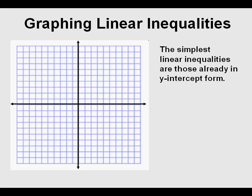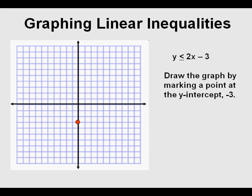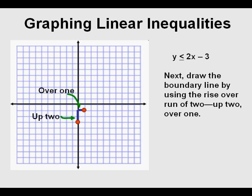The simplest linear inequalities are those already in y-intercept form. Let's consider this linear inequality: y is less than or equal to 2x minus 3. The first thing we need to do is draw the graph by marking a point at the y-intercept, in this case negative 3. Next we draw the boundary line by using the rise over run of 2 — a rise of 2 and a run of 1.